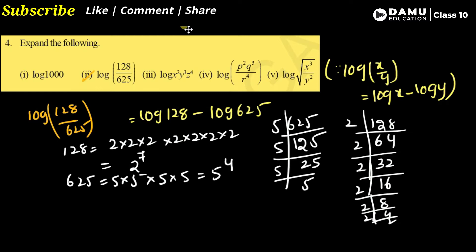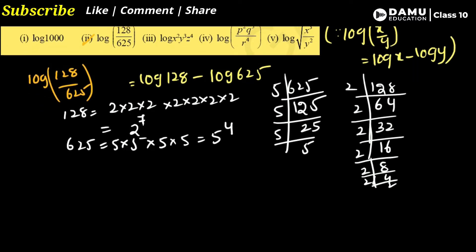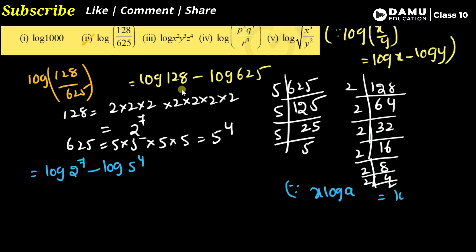So the values are 2⁷ and 5⁴. Writing in logarithm form: log(2⁷) − log(5⁴). Applying the formula log(a^x) = x·log(a), this gives 7·log 2 − 4·log 5.